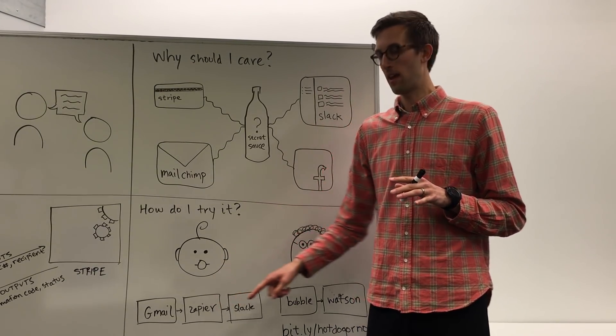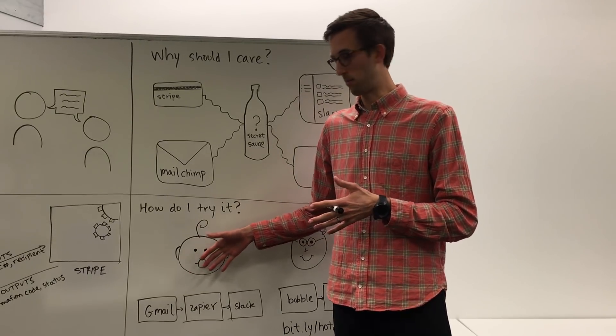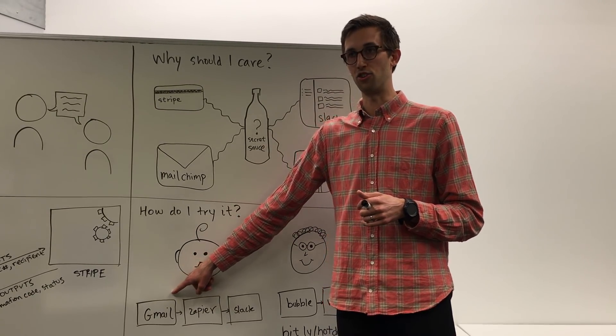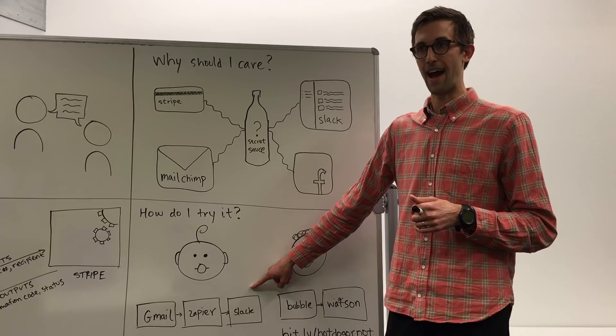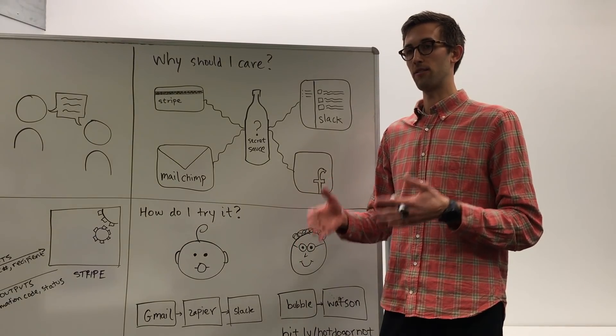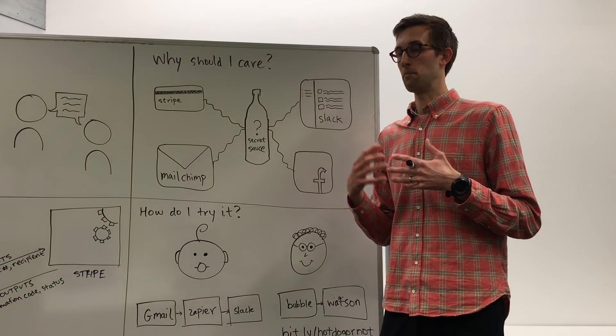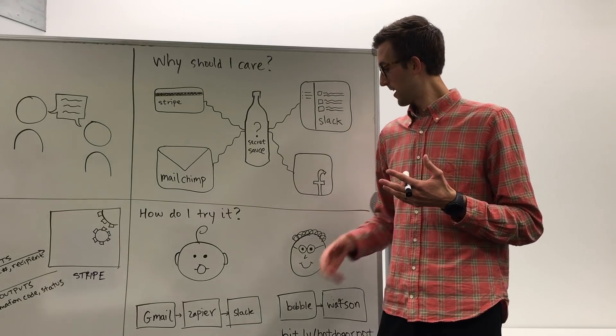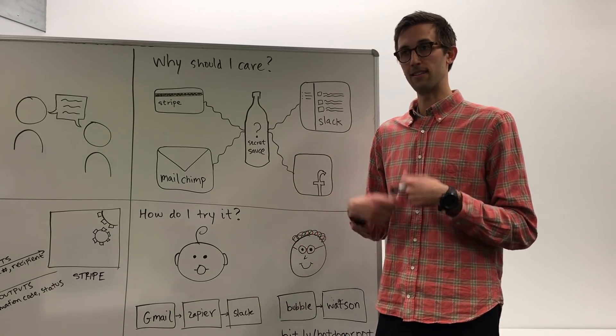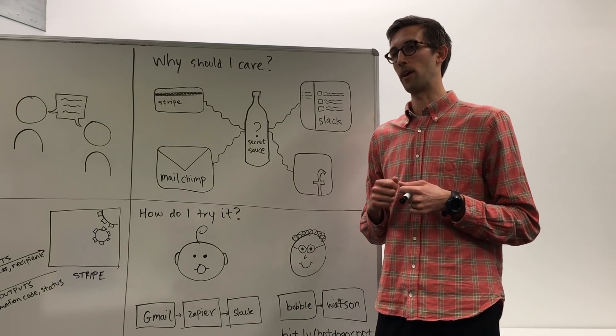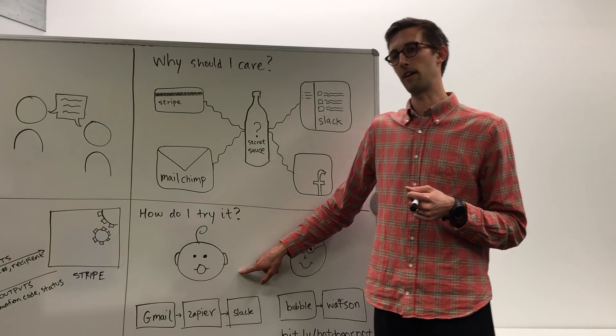So if you go to zapier.com, this is just a sample that you can try out, they have a connection to Gmail and a connection to Slack. So you can set up a call so that when you receive an email, maybe from a certain special server, it triggers Slack and sends you a Slack message so that you respond right away. So that's something you can set up by yourself.